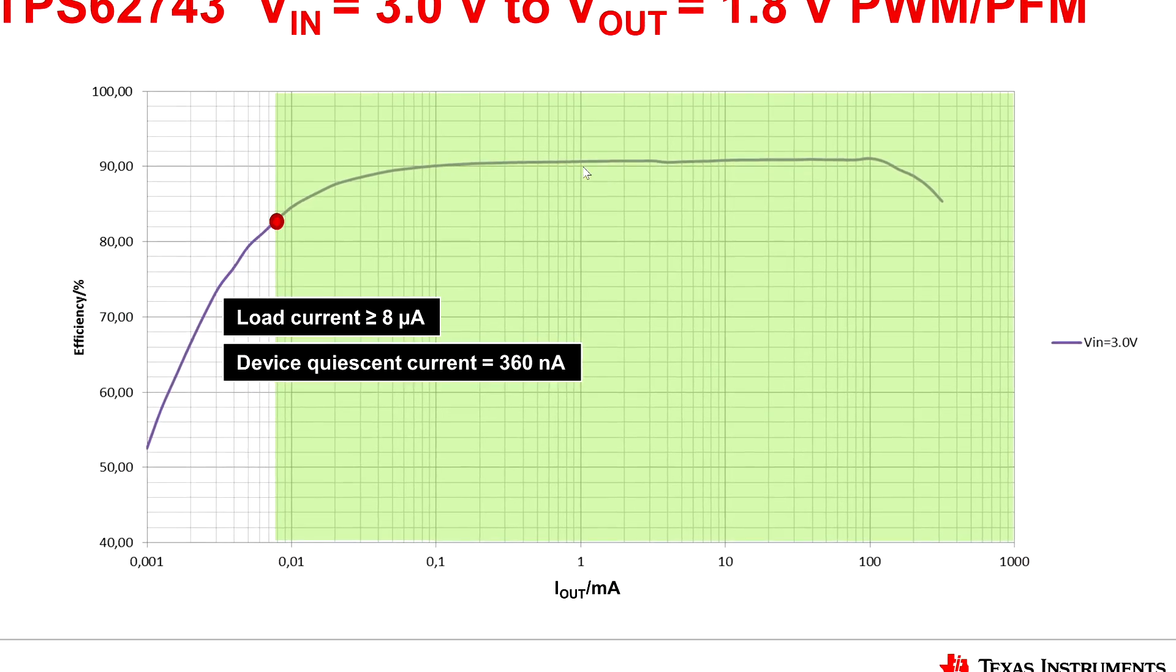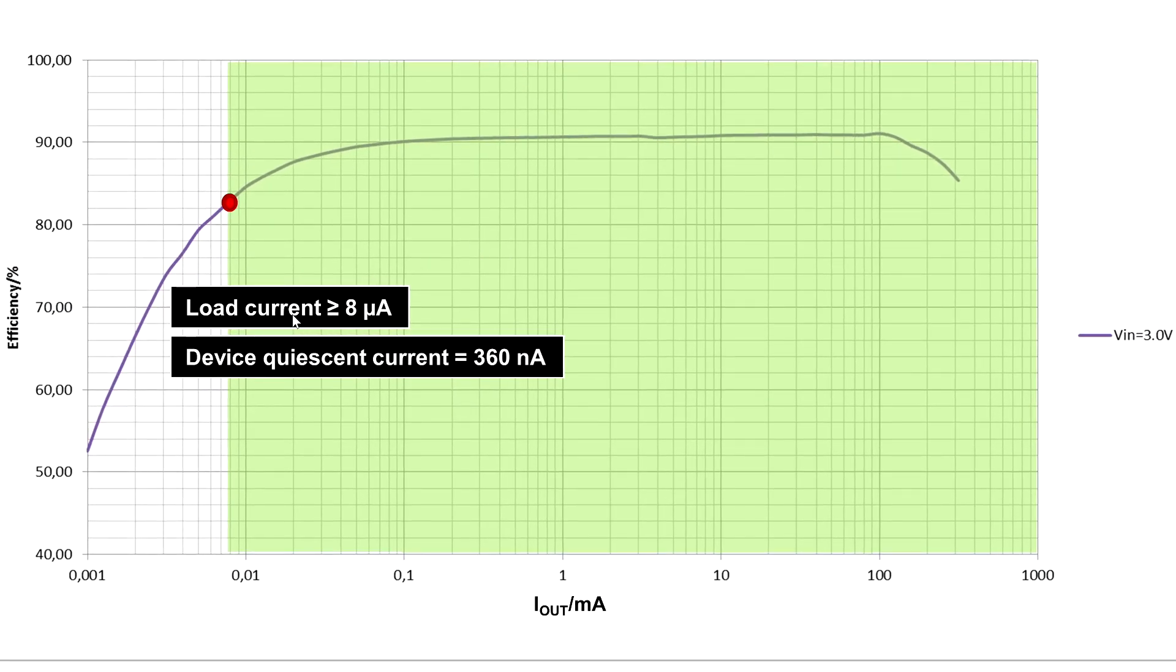Now this is very important, for instance if you run off a coin cell, because with an 8 microamp load current, your current you draw from your battery is reduced by almost 30% and that really extends your lifetime of your coin cell battery.